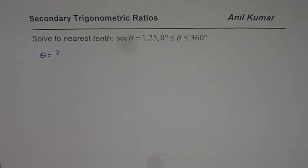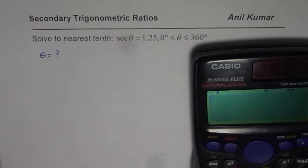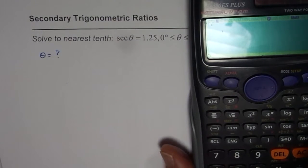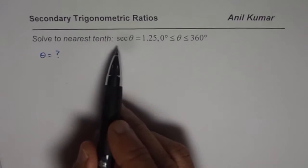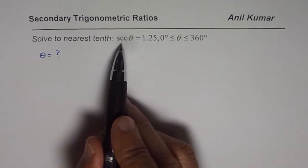How do we find it? Now if you look at the calculator, we have sine, cosine and tangent. We do not have the secondary ratios secant, cosecant and cotangent. Therefore, it becomes a must for us to write them in the reciprocal form.